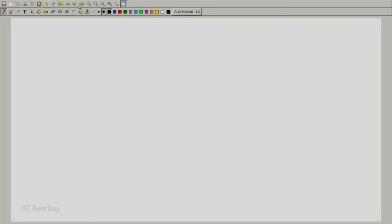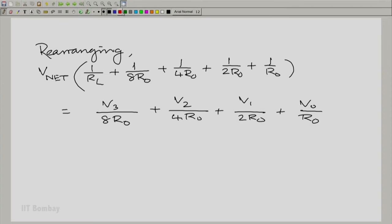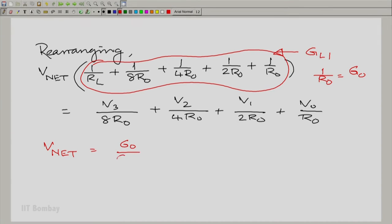Let us rearrange the terms. Let us give this whole expression, let us simplify. Let us call this whole thing here this big expression GL1, where G stands for conductance reciprocal of resistance and let us denote 1 by R0 as G0. We are saying Vnet equals G0 by GL1 into 1 by 8 times V3 and this can continue.